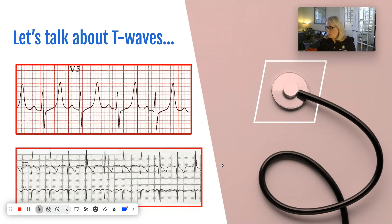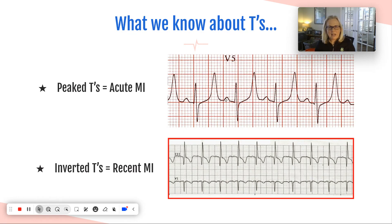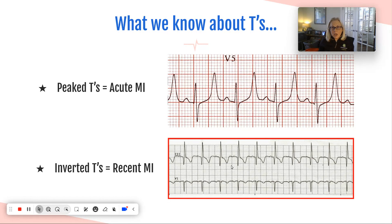What we already know about T waves is that peaked T waves typically mean an acute MI - this is the first stage going into an acute MI. After this, we would see ST elevation. Inverted T waves also mean a recent MI. The more deeply inverted, the more recent the MI - just a few hours ago versus a few weeks ago, we're going to see different sizes in how deeply inverted it is.